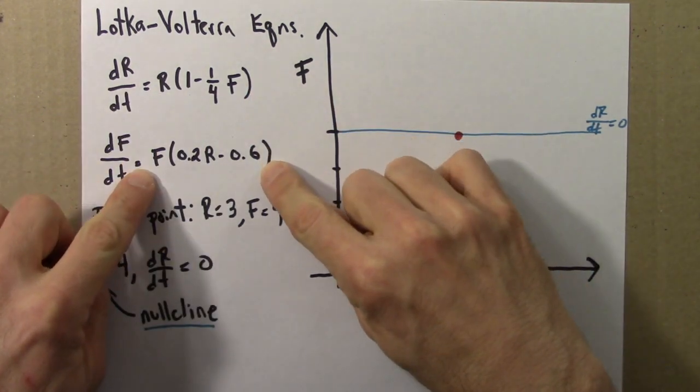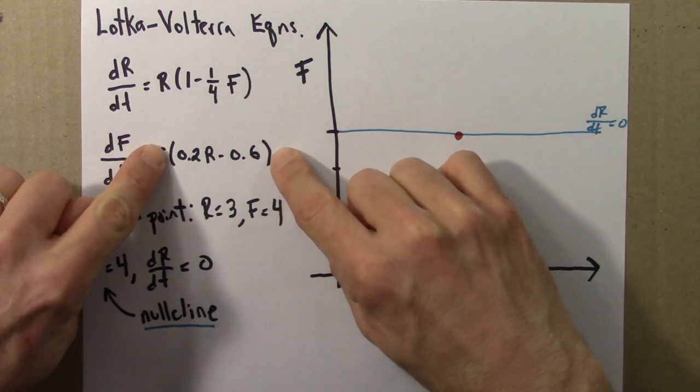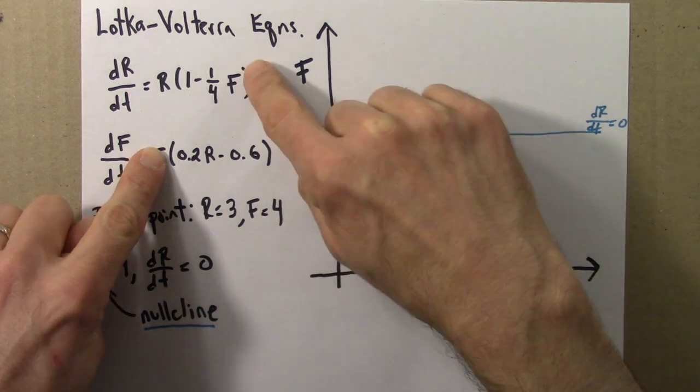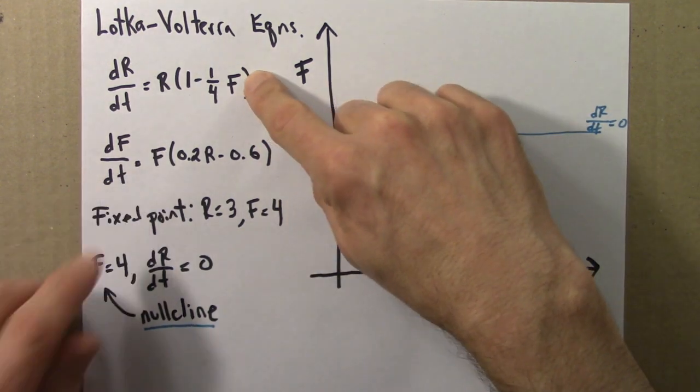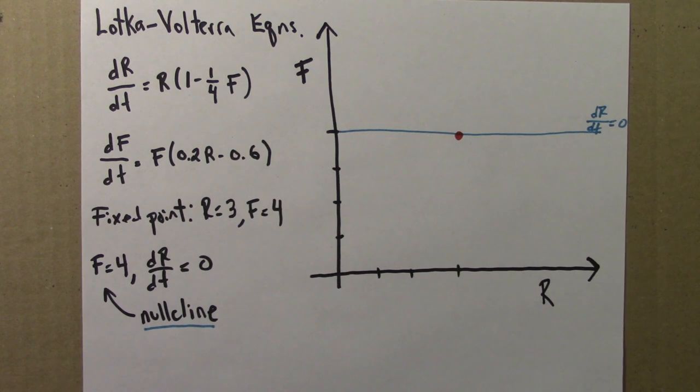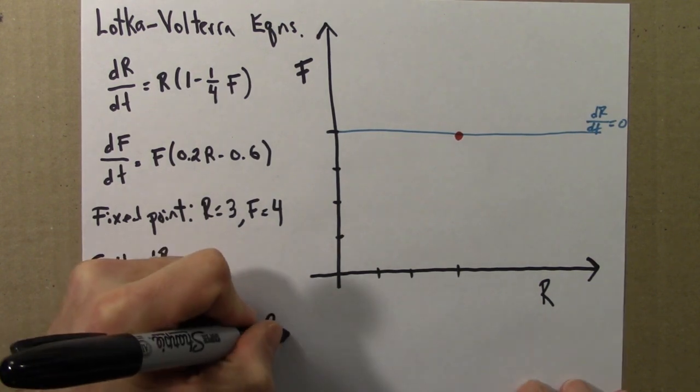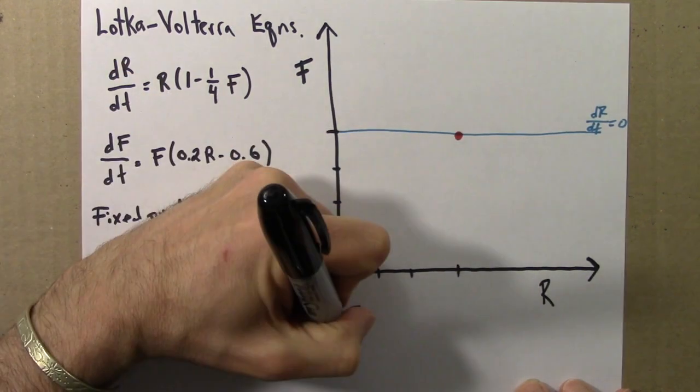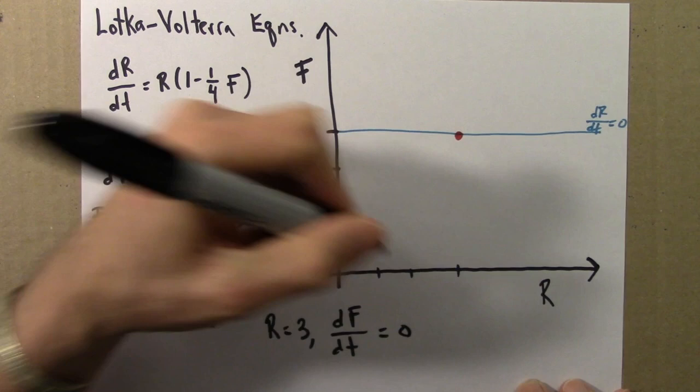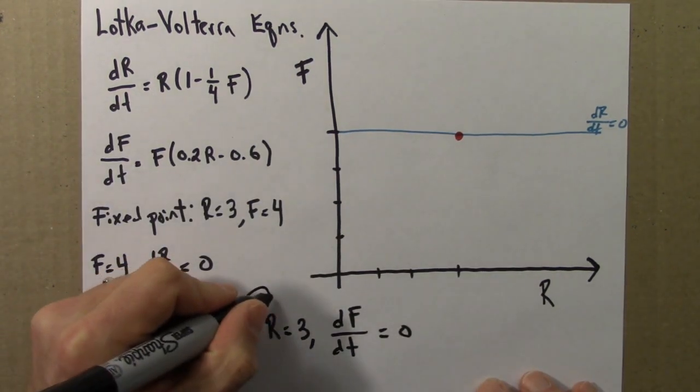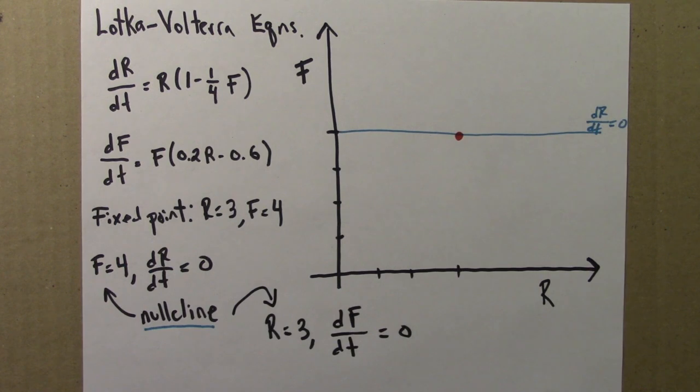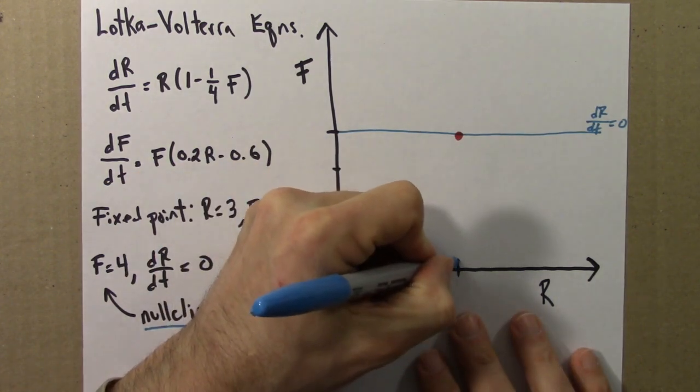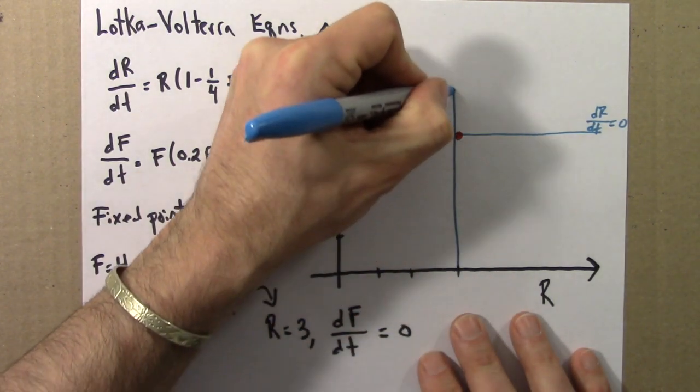And let's look at the other nullcline. That would happen if we made this term in parentheses equal to 0, and we didn't worry about this. So that would be if r equals 3. Let's see, I'll write that here. If r equals 3, then df/dt equals 0. So this is another nullcline. And r equals 3 on this plot is a vertical line like this.